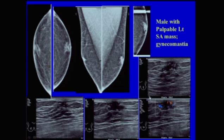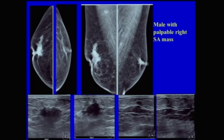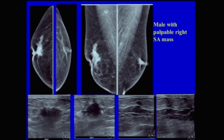The male breast is included in this section. A male patient with a palpable left subareolar mass shows asymmetry between one side and the other on mammogram. Posterior to it there was irregularity and increased flow — this patient had gynecomastia. Sometimes in these cases biopsy is necessary if the diagnosis can't be made with ultrasound and mammogram alone. Another male patient with a palpable right subareolar mass showed irregular borders and nipple retraction on mammogram, and an irregular hypoechoic mass on ultrasound — this was an infiltrating ductal carcinoma.